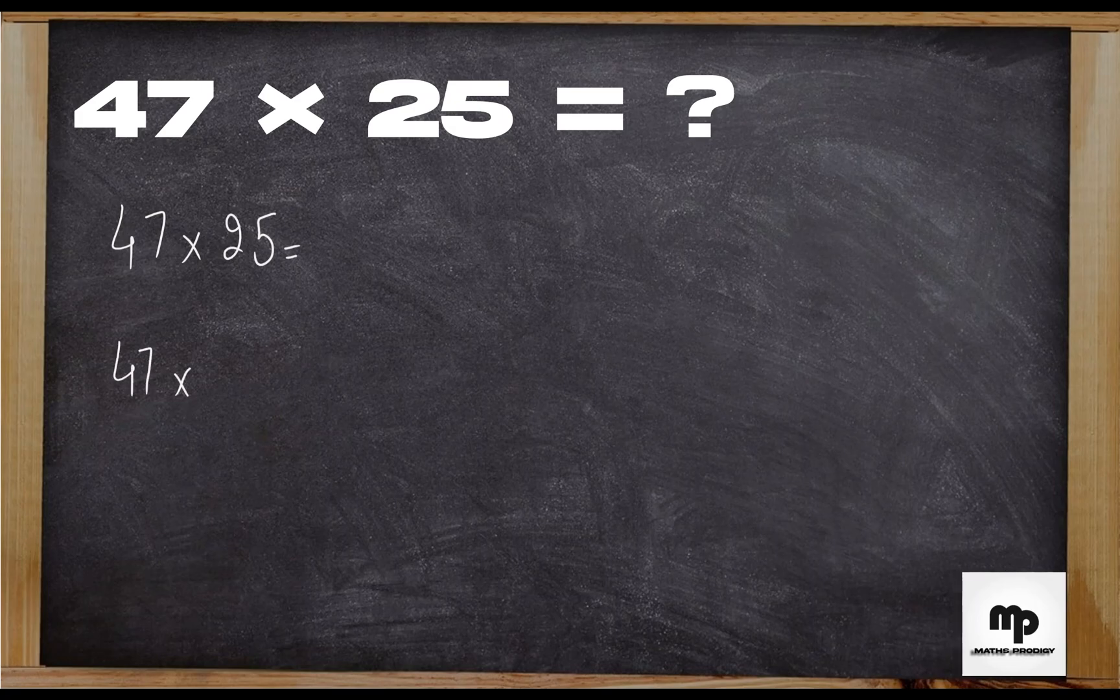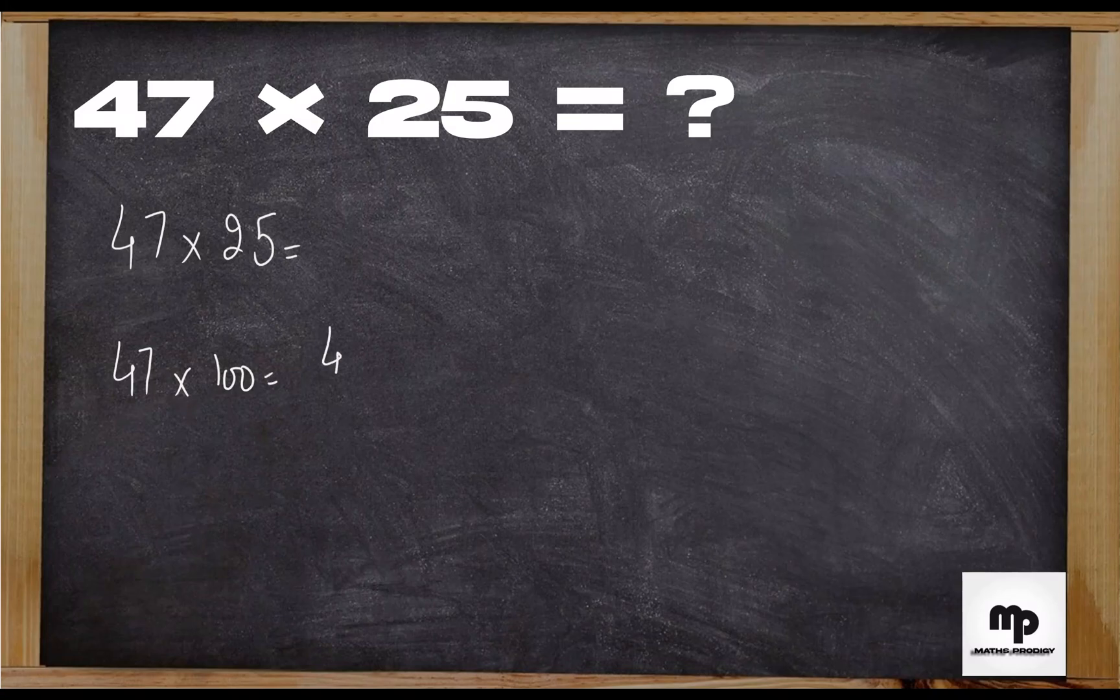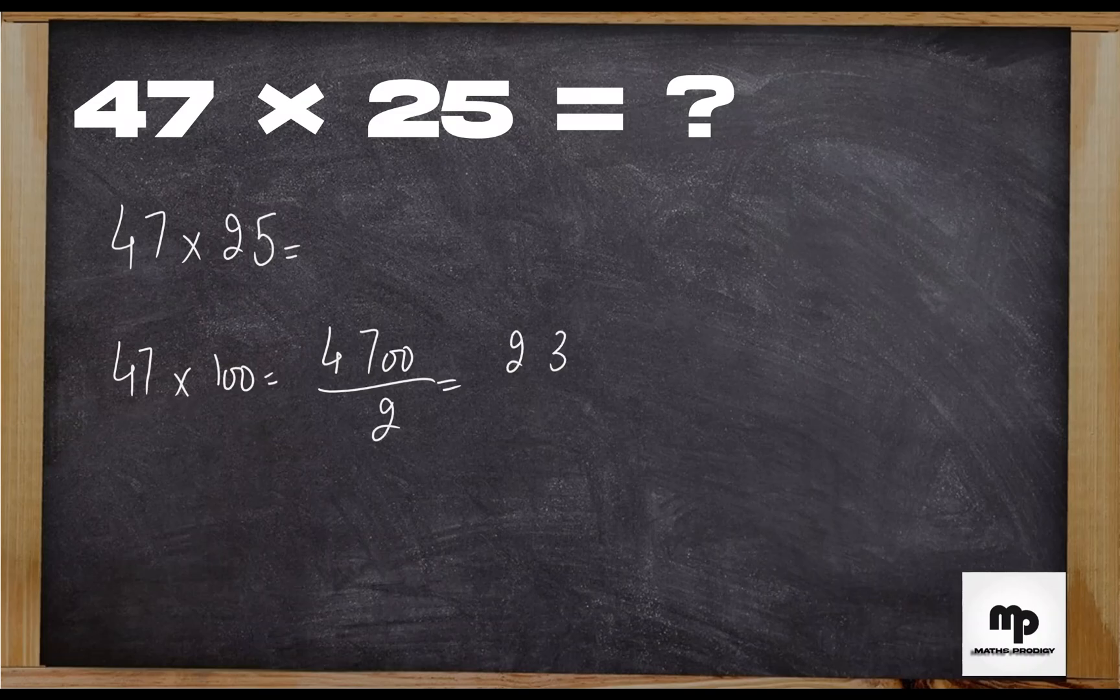That is 4,700. Make it half, which is also easier: 2,350. And half it again, which is 1,175. Here you go! Now that you have learned this method, we will do some more practice.